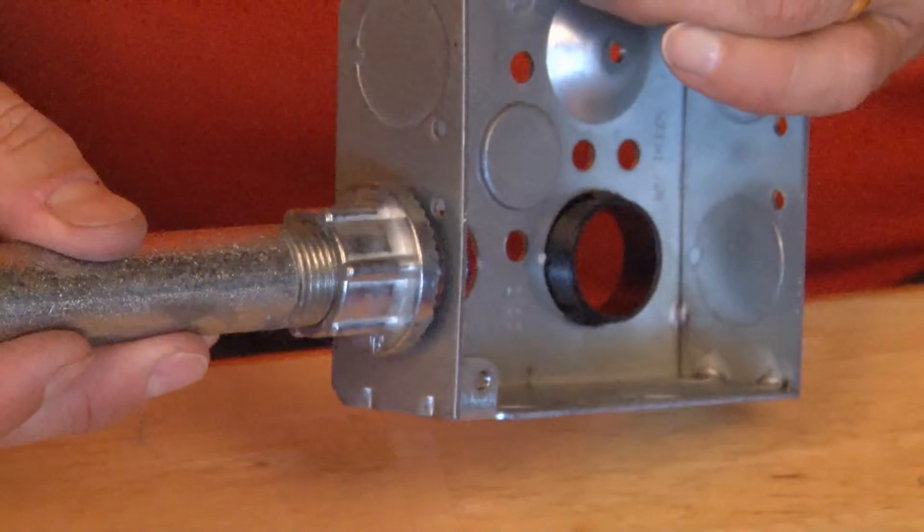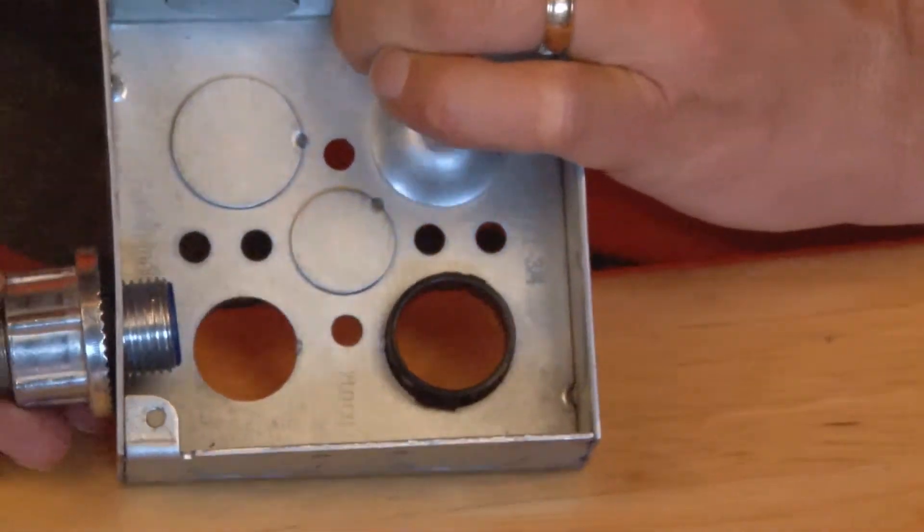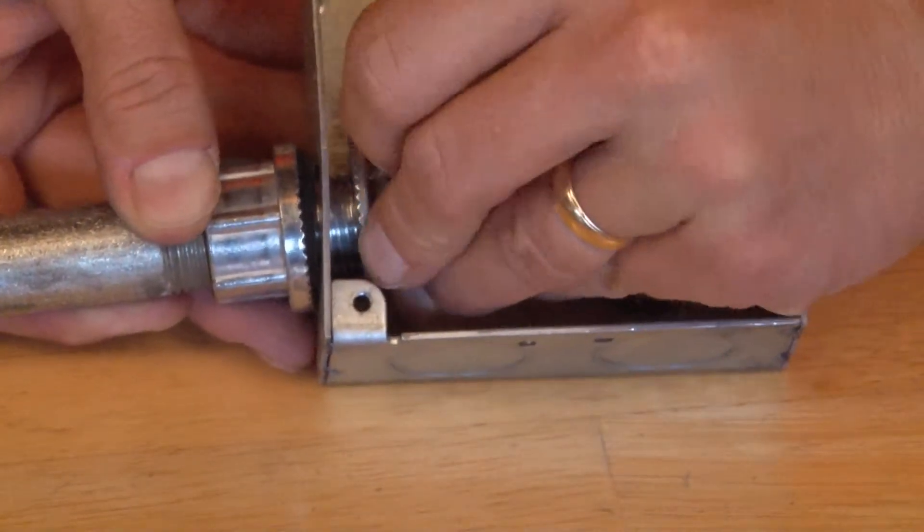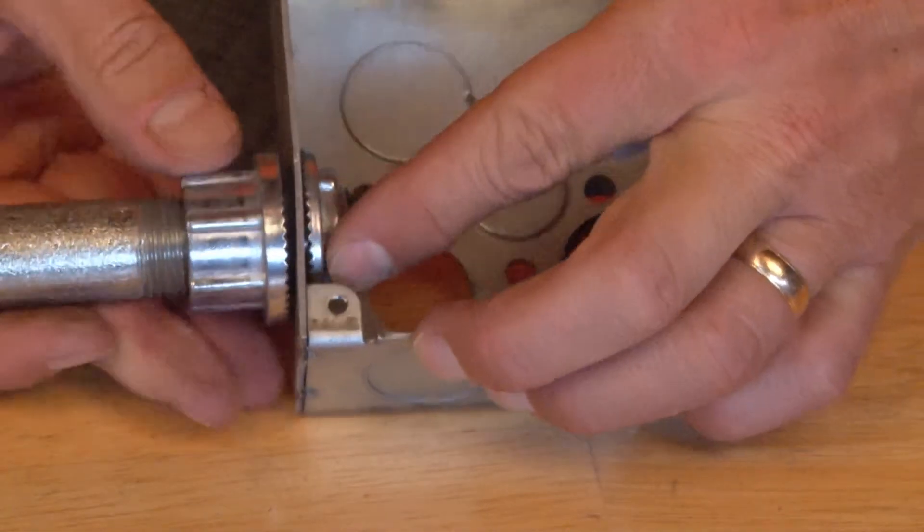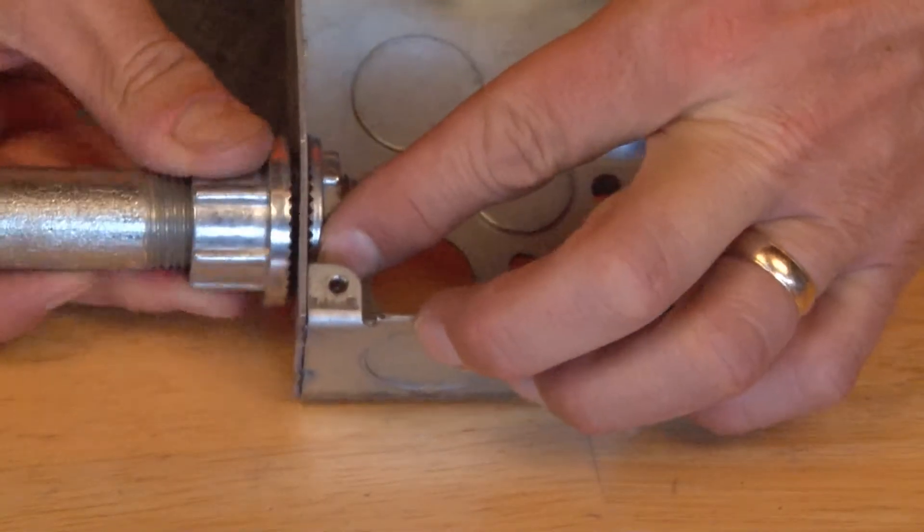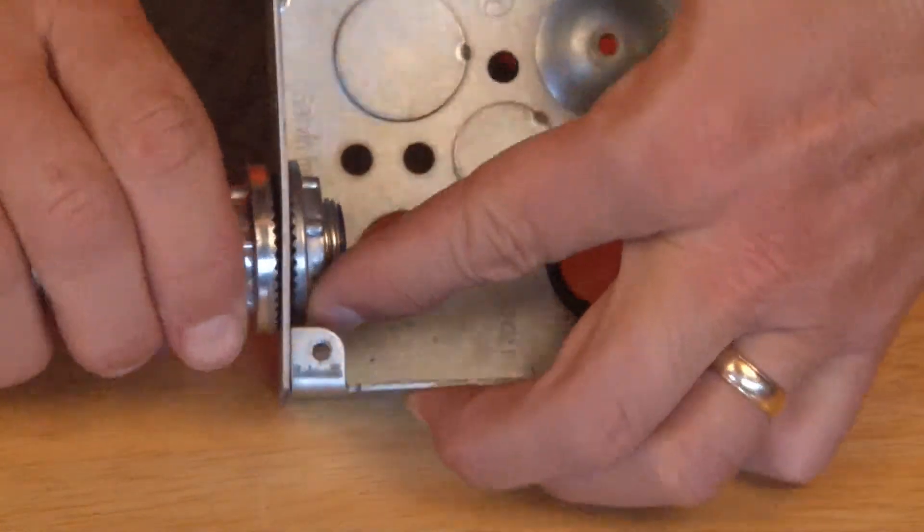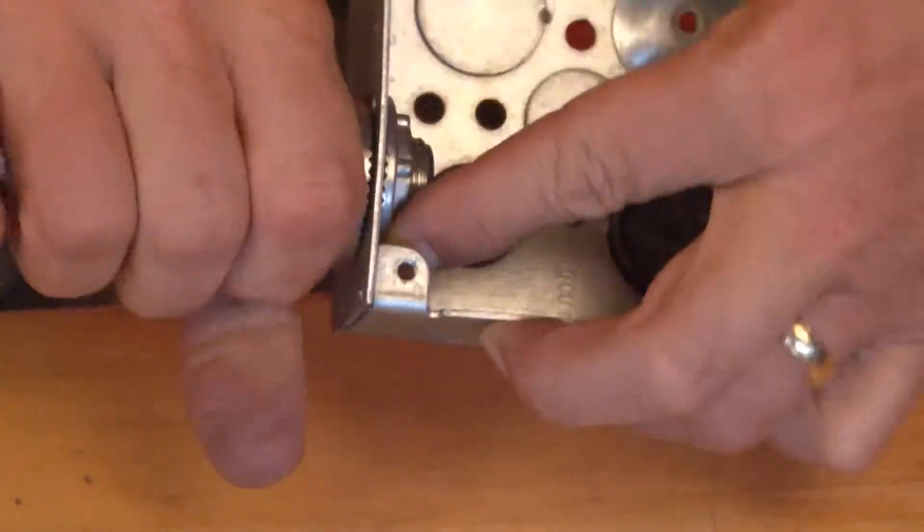Once you place it on the hole, it's important now to make sure that you get the lock nut secured on the inside of the box. By tightening the lock nut on the inside of the box, the body will come together, and of course you want to use channel locks or pliers, but for purposes of this video I'll use my hands.